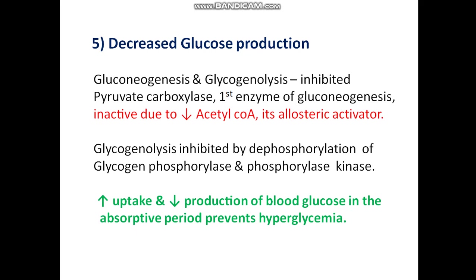Glycogenolysis is inhibited by dephosphorylation of glycogen phosphorylase and phosphorylase kinase. Increased glucose uptake combined with decreased glucose production during the absorptive period prevents hyperglycemia.